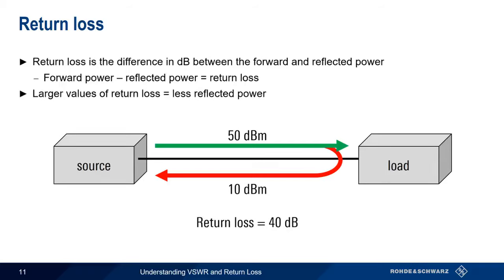Larger values for return loss mean that less power is reflected, so we usually want return loss to be as large as possible. Return loss must always be a positive number, since the level of reflected power is always less than the level of forward power. Even in the case of a load that reflects 100% of the forward power, some power will be lost along the path from the source to the load and back.